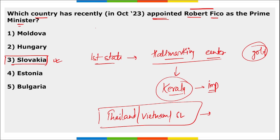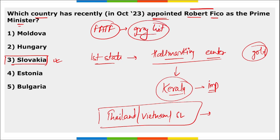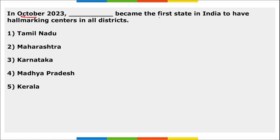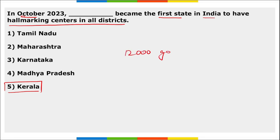Which country was recently removed from FATF's grey list — a list of countries involved in terror financing? It is the Cayman Islands. Cayman Islands was removed from the grey list. Kerala has hallmarking centers across all its districts, with about 12,000 gold merchants and gold business worth more than 1 lakh crore rupees.